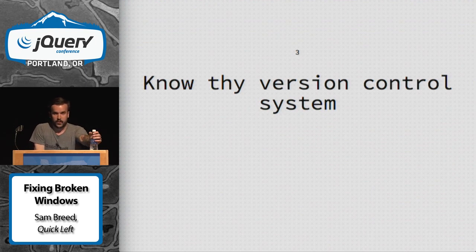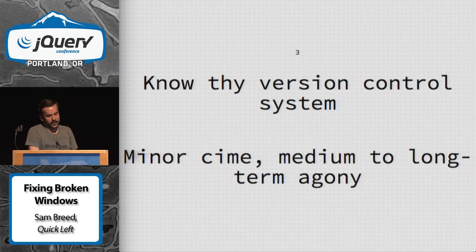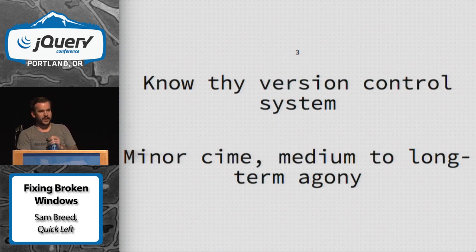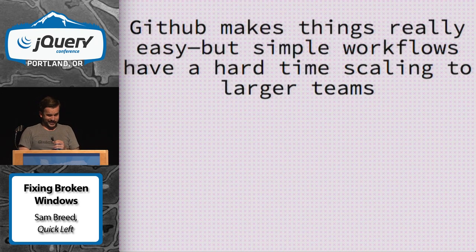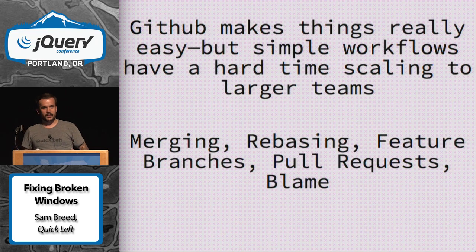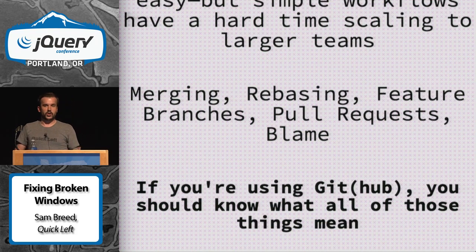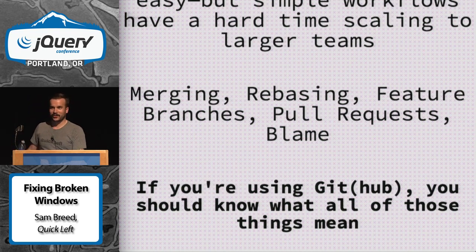Number three: no version control system. You can get by on an SVN team just committing and syncing, or on a Git team just knowing git pull and dealing with manual merge conflicts. But simple workflows have a really hard time scaling to larger teams. If you don't know what merging, rebasing, using feature branches, doing pull requests, and using git blame mean — but you're still using Git and GitHub every day — you've got some work to do. You should know all of these things. It's another tool in your toolbox and you're fundamentally ignoring it if you choose not to read the manual.